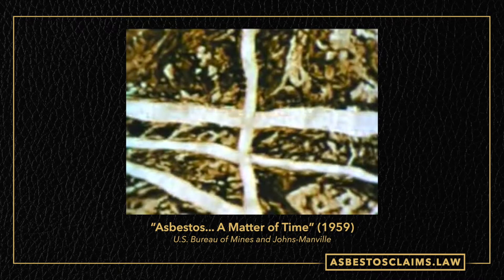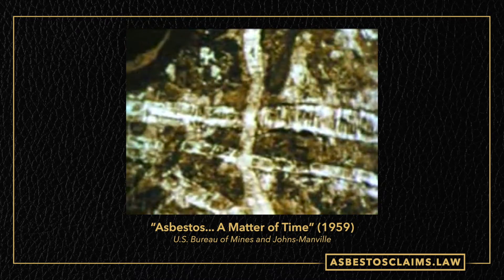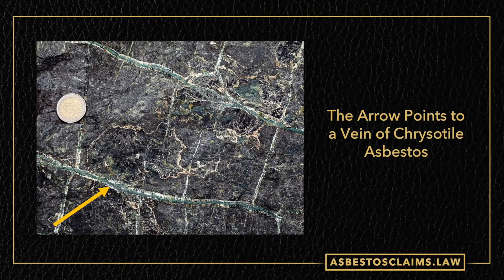This is what a vein of asbestos actually looks like. The arrow here is pointing to a vein of chrysotile asbestos. This is a European sample — that's why there's a European coin in the frame for scale. If you were to walk up to that vein, you might wonder: could I pull some of that asbestos out with my bare hands? And the answer is yes, you absolutely could.